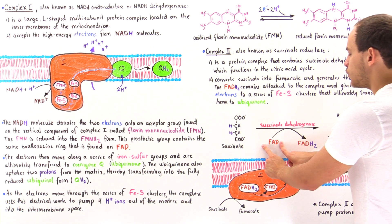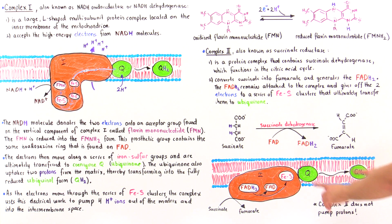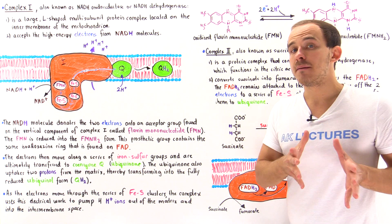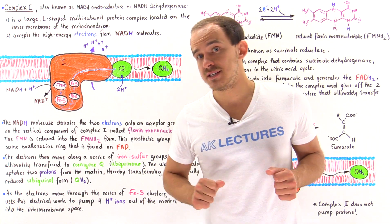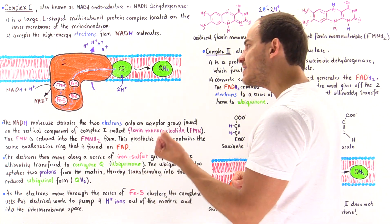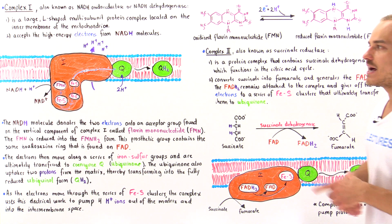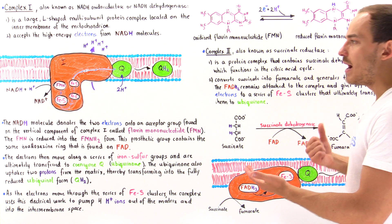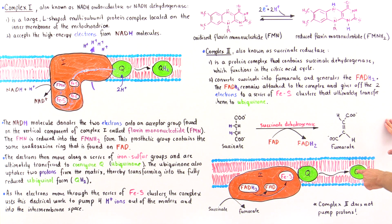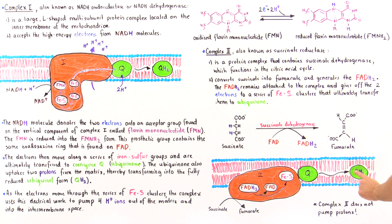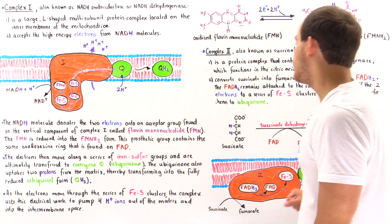Complex 2, also known as succinate reductase, oxidizes succinate into fumarate and reduces FAD into FADH2. The FADH2 remains bound to complex 2 rather than detaching. Within complex 2, the two electrons are abstracted from FADH2 and move through a series of iron-sulfur clusters, ultimately binding onto coenzyme Q ubiquinone. The ubiquinone takes up two H+ ions to form ubiquinol, which detaches and moves on to complex 3.